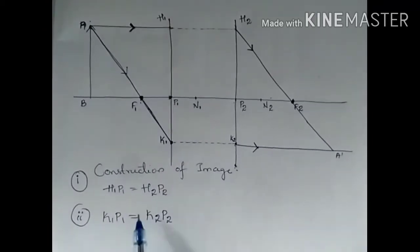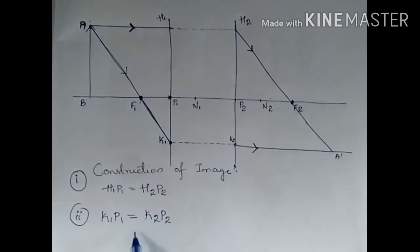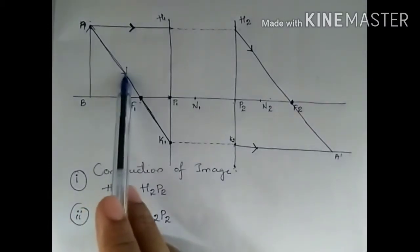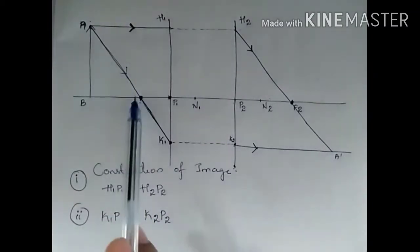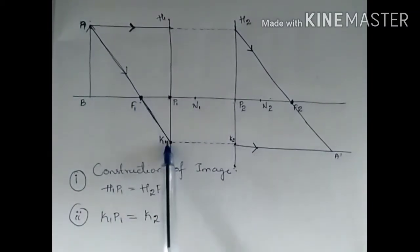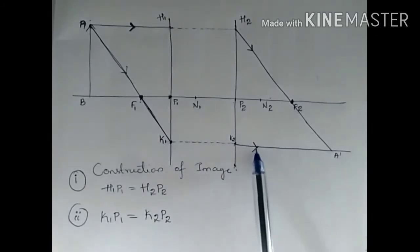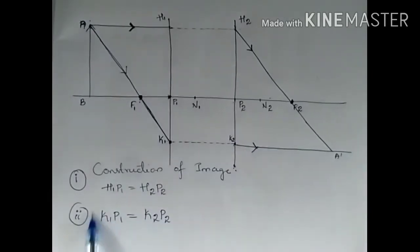Again, if you just write the points as I have written here, you will not get the marks. You have to write the statement describing how each ray is incident, at what point it crosses, and how it emerges. Only after writing that statement should you write that K1P1 equals K2P2.